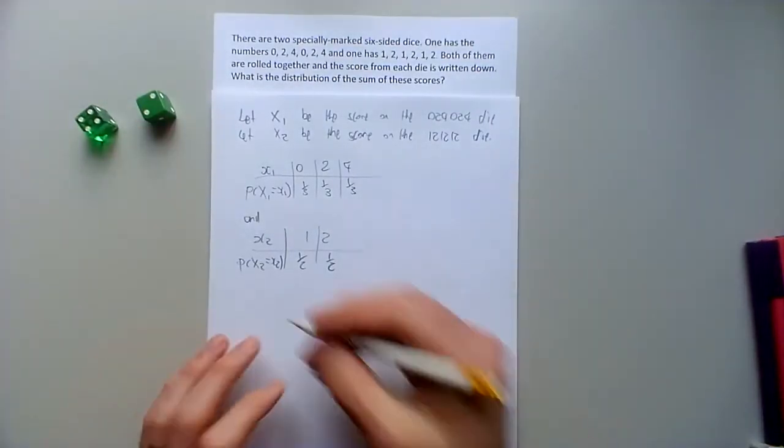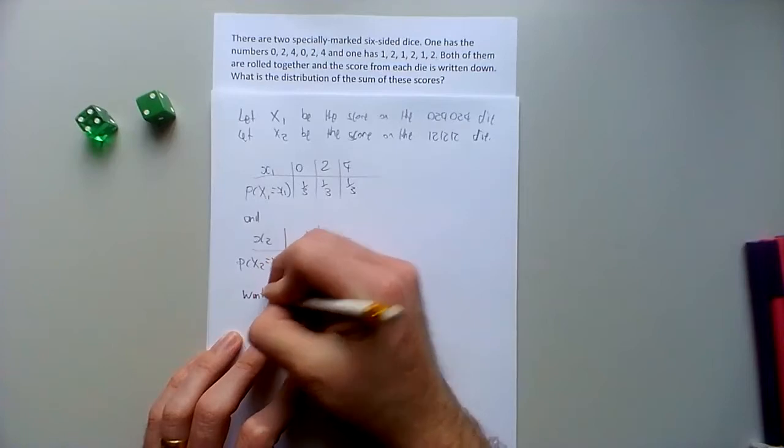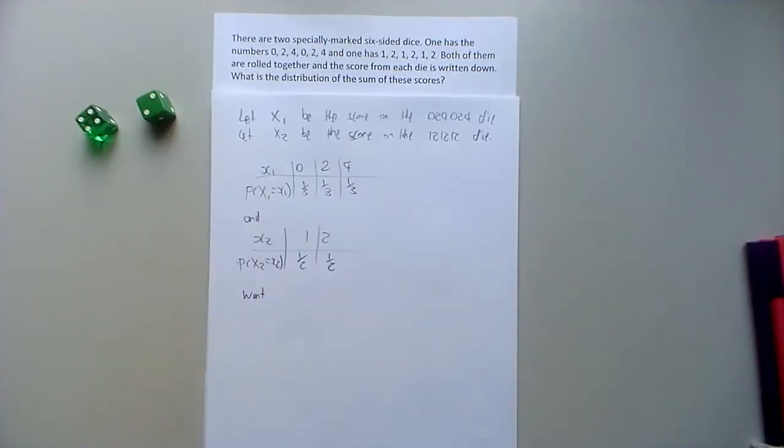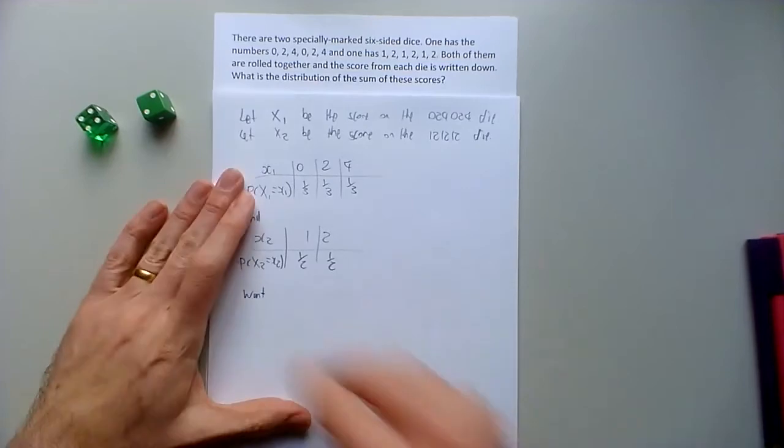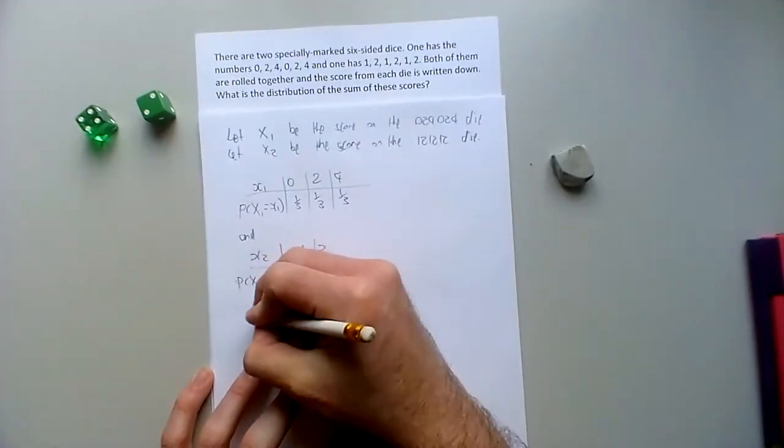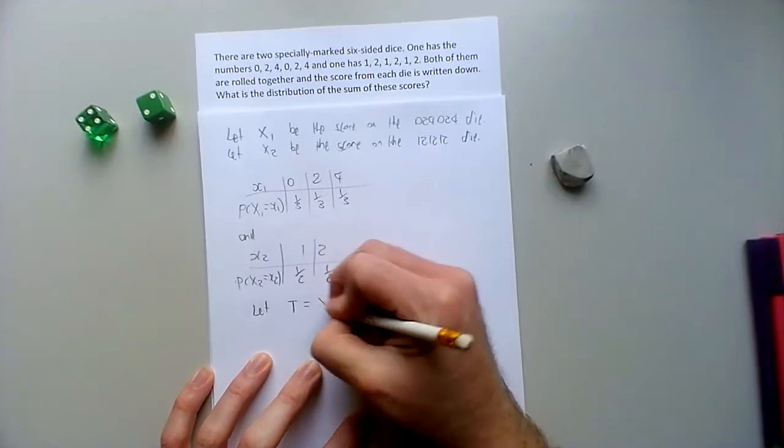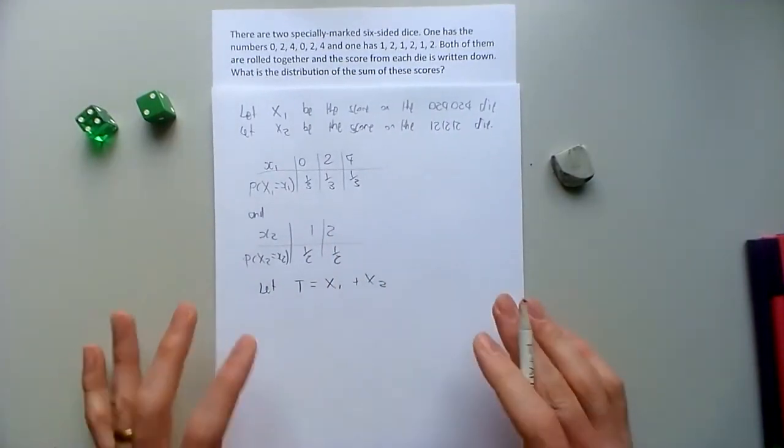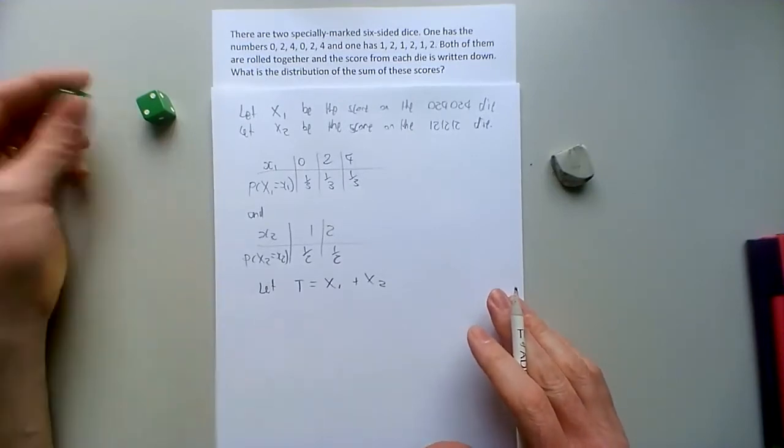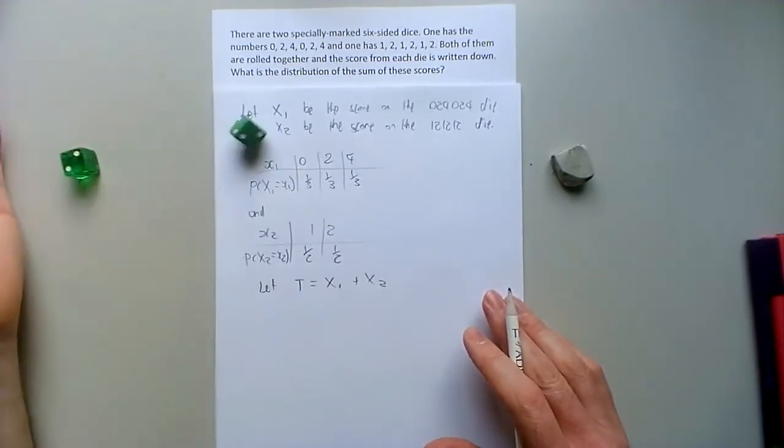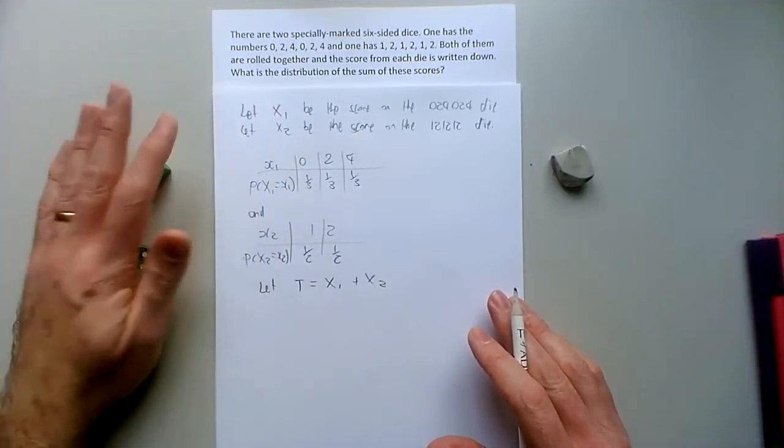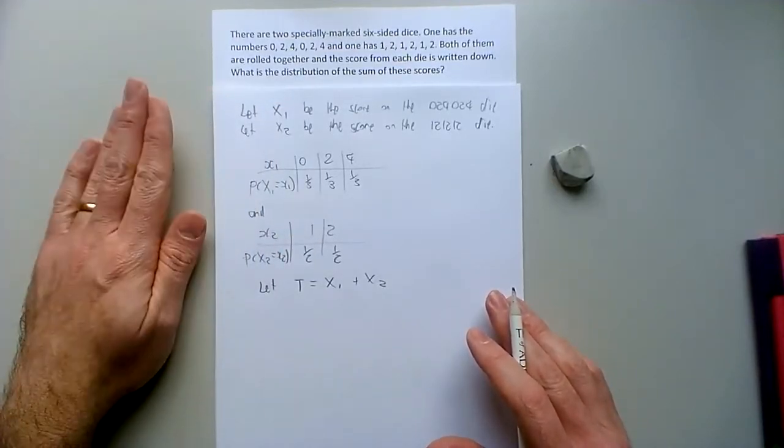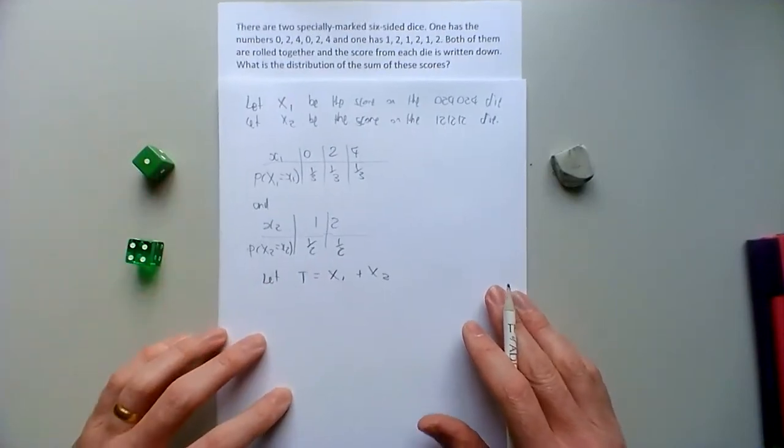And so what we want is the distribution of x1 plus x2. Okay, so before we even want that, maybe we should say let t be x1 plus x2. And what we want is the distribution of t. So the two dice would be independent of each other. So any option for one of them could go with any option for the other. And that's a really good time to use a tree diagram, I reckon, to combine them.